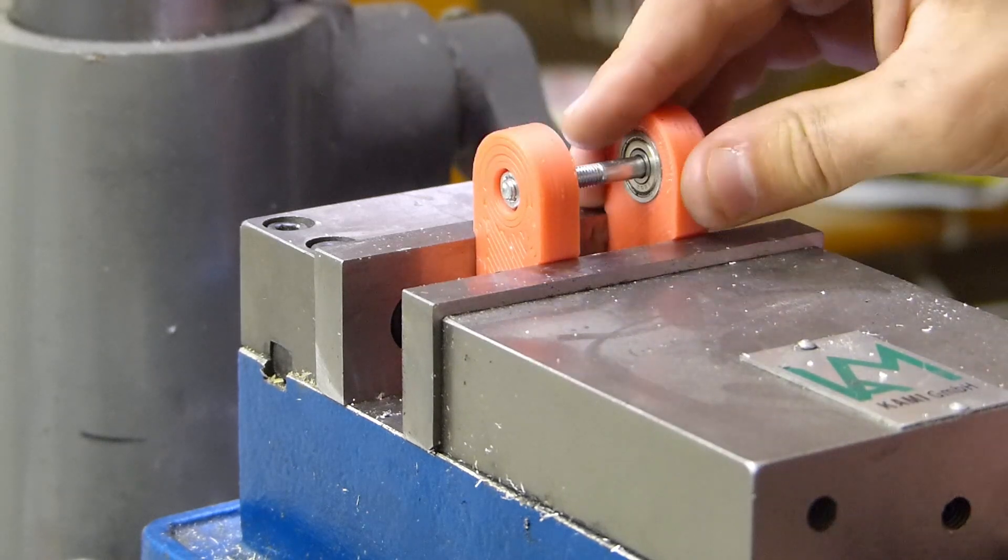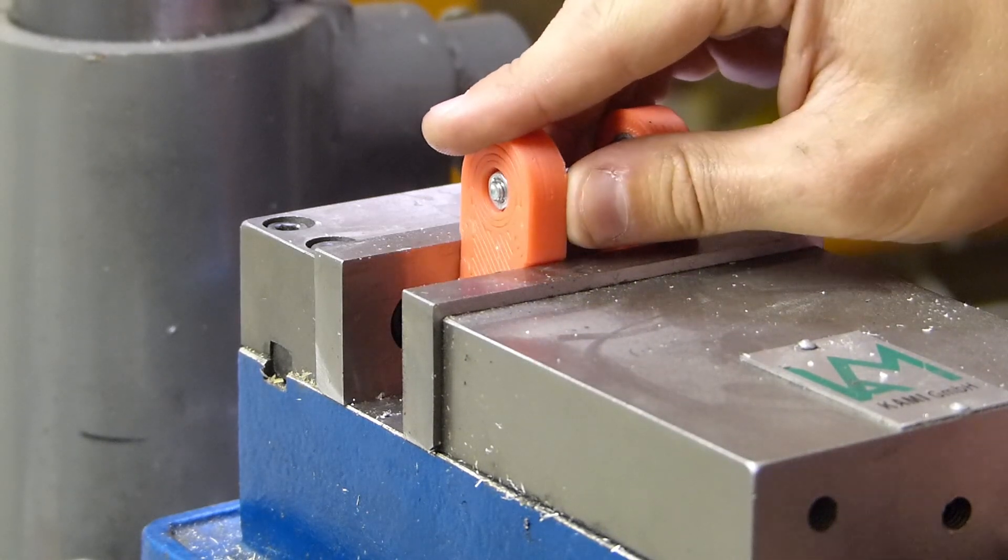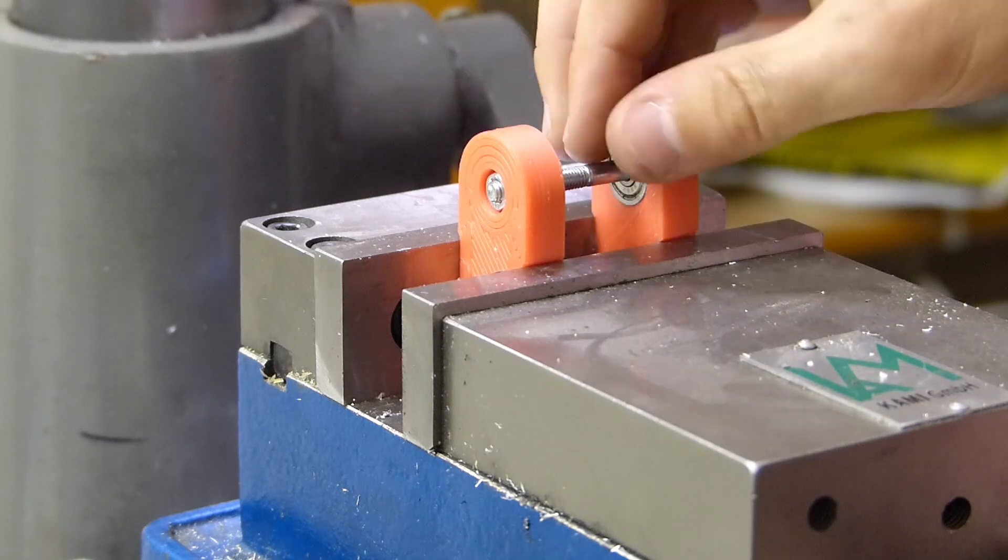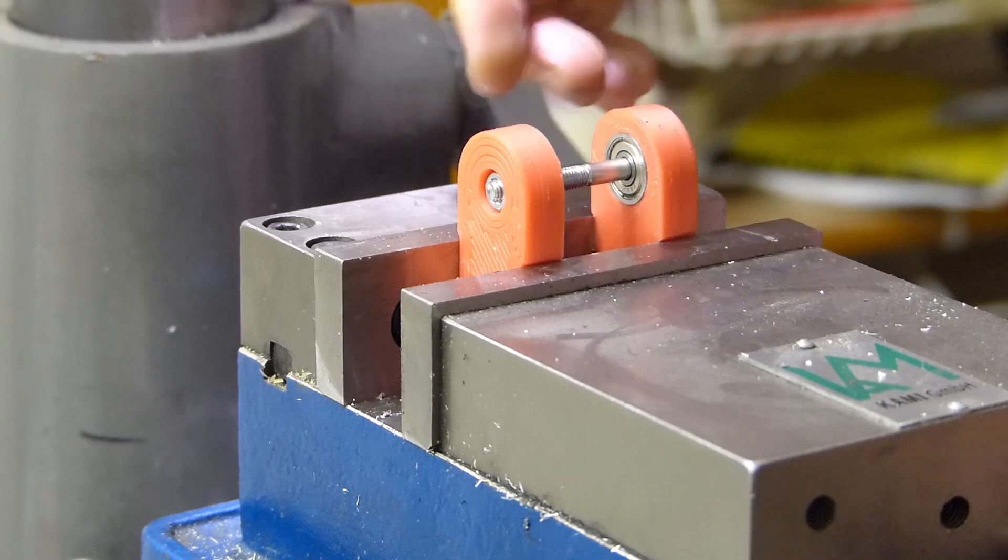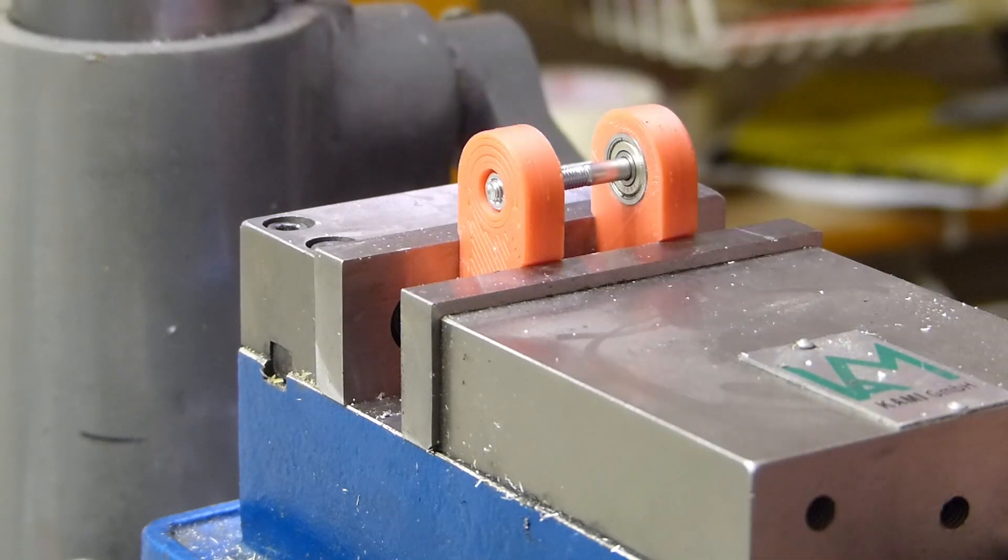So for the actual hobbing you can use a lathe, a mill, a drill press or a cordless drill, but if you have a mill or a lathe available, use those since those give you very fine control about how fast you're actually hobbing the blank.